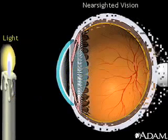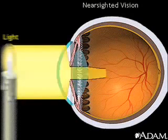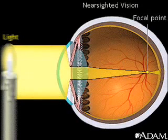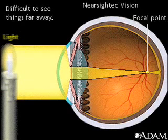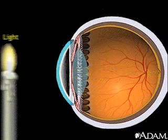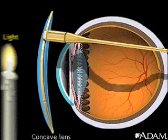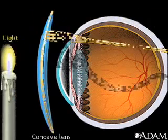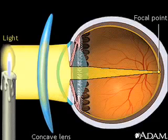Because a nearsighted eye is longer from front to back than a normal eye, light is focused in front of the retina instead of directly onto it. This makes it difficult to see things that are far away. A person with a long eye is referred to as nearsighted. Glasses with concave lenses are used to correct nearsightedness, focusing light back onto the focal point of the retina.